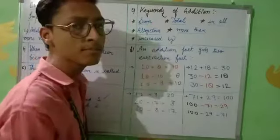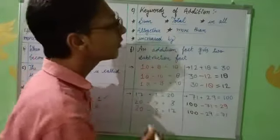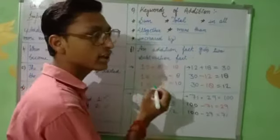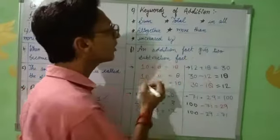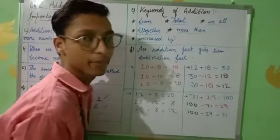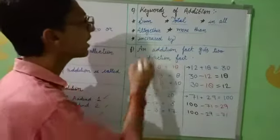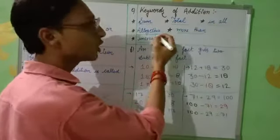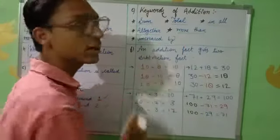Number one is sum, total, in all, altogether, more than, increased by. One more time we are going to revise: sum, total, in all, altogether, more than, increased by.